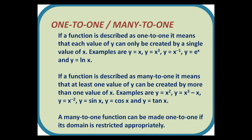If a function is described as one-to-one, it means that each value of y can only be created by a single value of x. Examples include the basic cubic y = x³, linear functions which aren't horizontal or vertical, and the exponential and logarithmic functions. If a function is described as many-to-one, it means that at least one value of y can be created by more than one value of x. Examples are quadratics, cubics with wiggly bits like y = x³ − x, and trig functions. A many-to-one function can be made one-to-one if its domain is restricted appropriately.